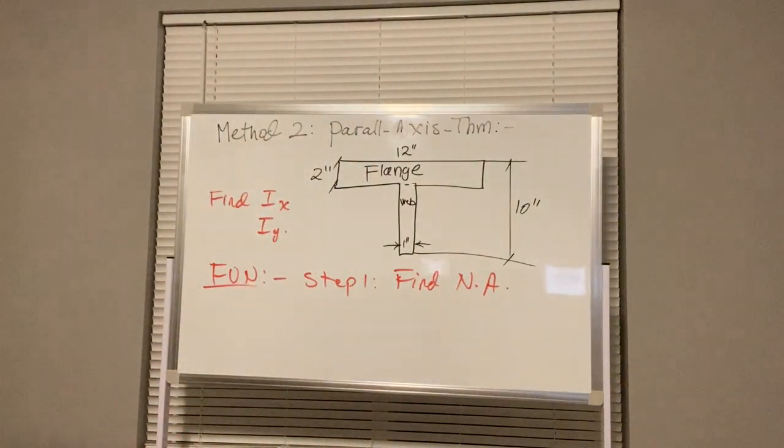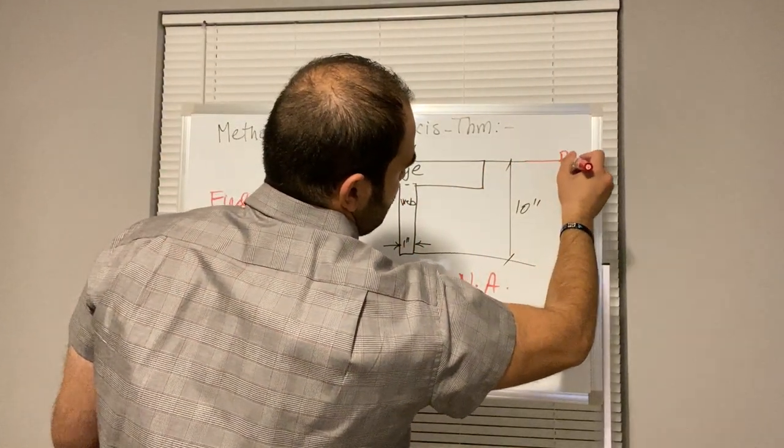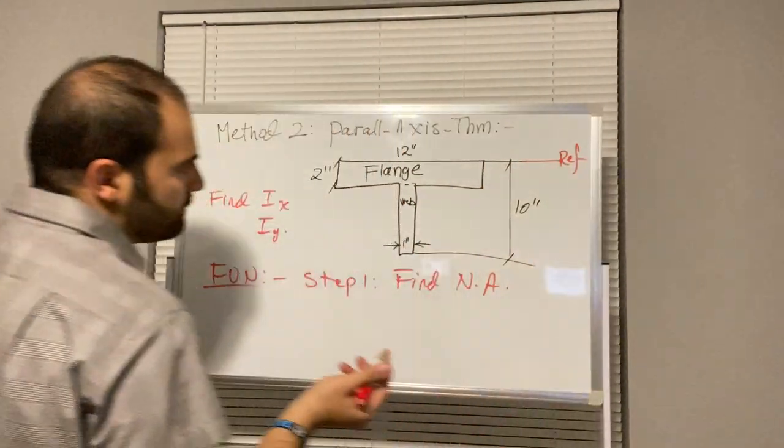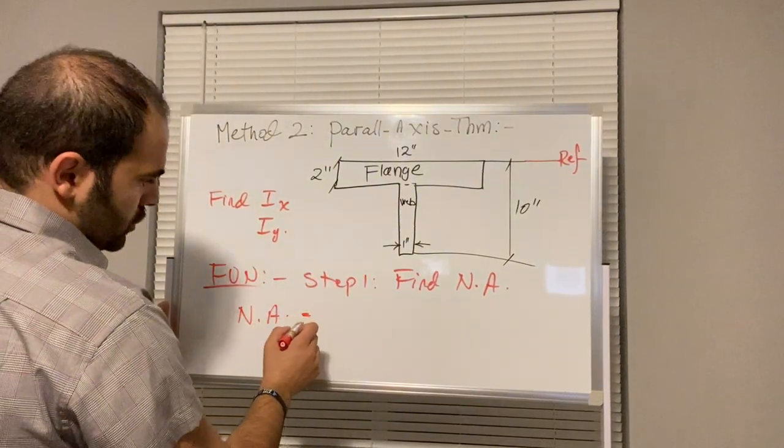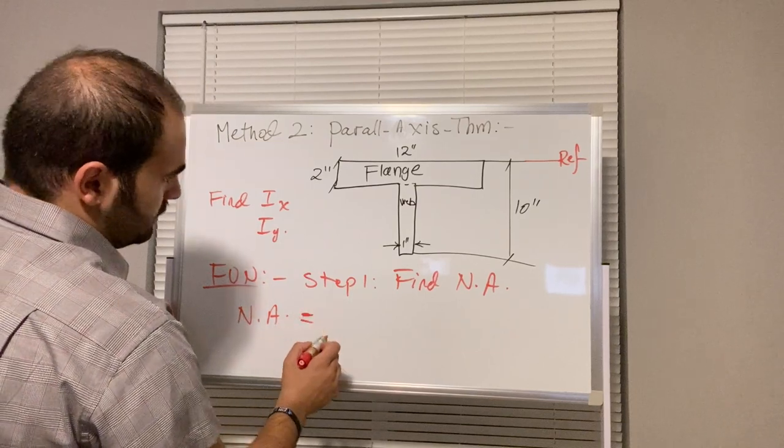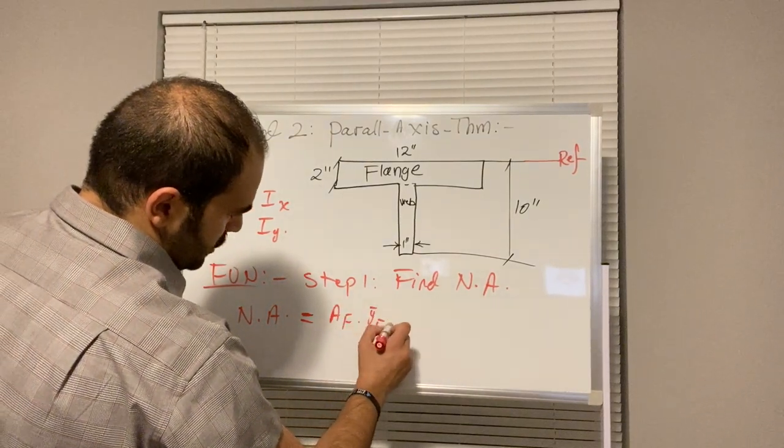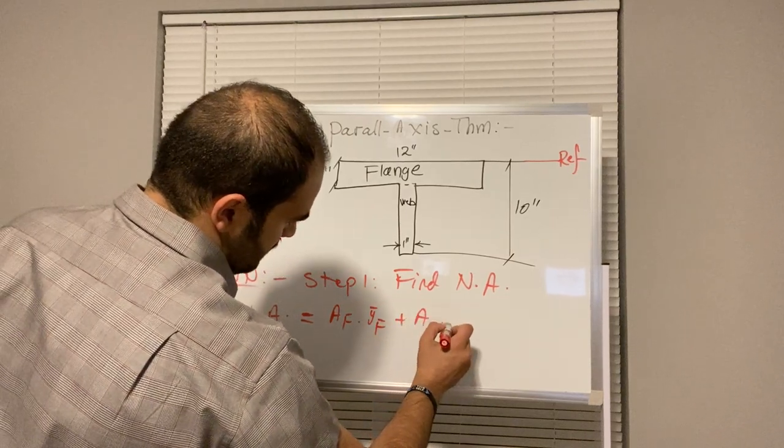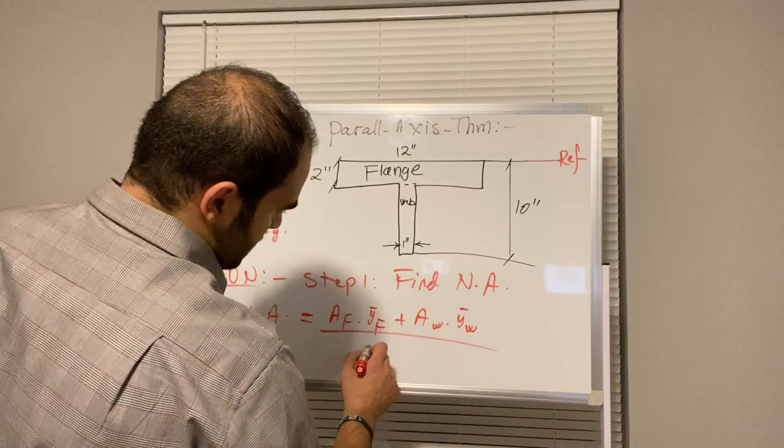To do so, let's define the reference to be top fiber. So your neutral axis would be: area flange times Y bar flange plus area web times Y bar web, divided by the total.